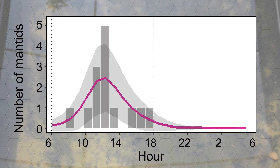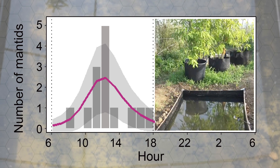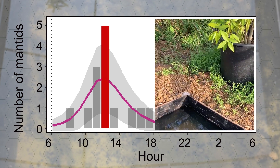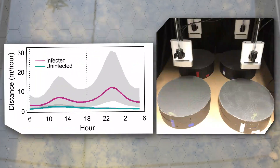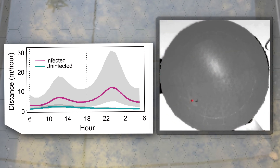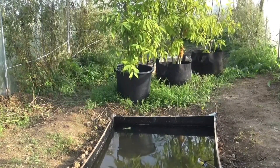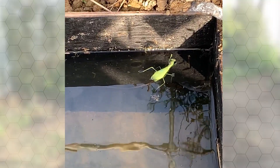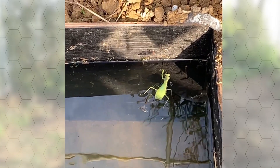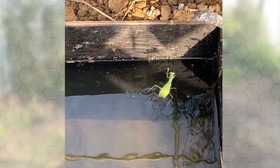Another noteworthy finding is that the water entry behavior of the infected hosts occurred most frequently around noon. In a laboratory experiment, the infected mantis walked more than an uninfected mantis around noon. The daytime peaks of the mantis entry into water and walking distance during daytime were synchronized at noon. We conclude that the alteration of the daily activity pattern is an additional piece of host manipulation that causes the daily variation in the water entry behavior of the infected mantis.